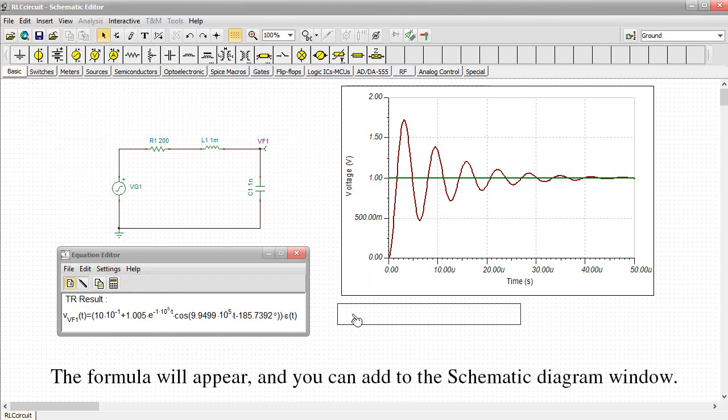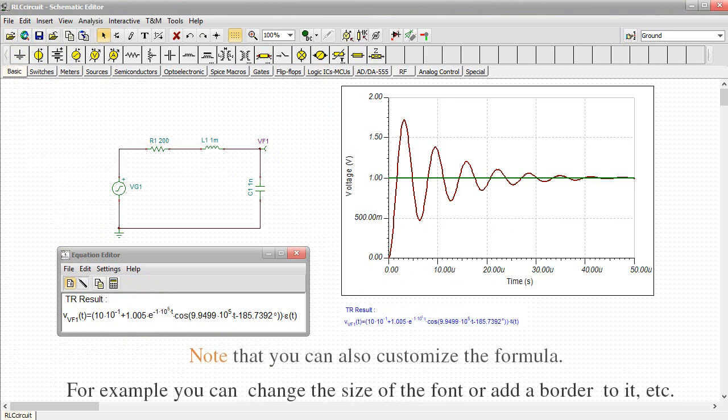The formula will appear and you can add to the Schematic Diagram window. Note that you can also customize the formula. For example, you can change the size of the font or add a border to it.